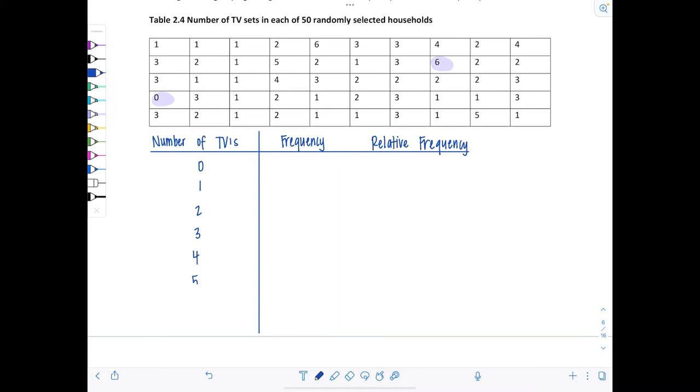Since we're doing single value grouping, each observation is its own class: 0, 1, 2, 3, 4, 5, and 6. Now we have to figure out the frequency for each of these values. How many times was zero televisions reported? Let's go through. There's just that one with zero TV. How many have just one TV? 1, 2, 3, 4, 5, 6, 7, 8, 9, 10, 11, 12, 13, 14, 15, 16. So I got 16 here.